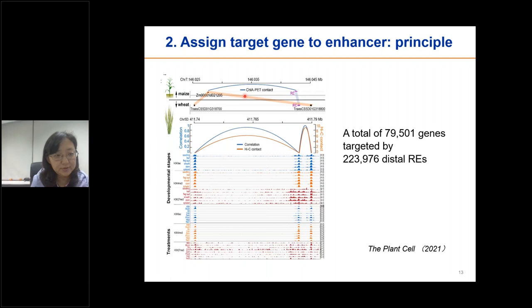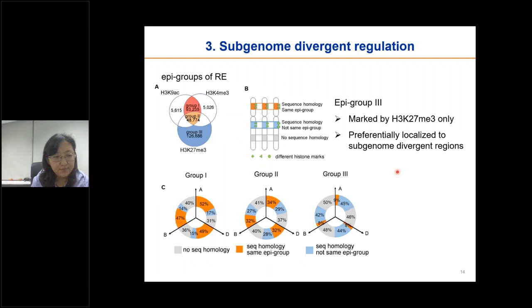Here is an example of an enhancer-promoter pair that is conserved between maize and wheat. The maize gene was duplicated in wheat, but the interaction with these regulatory elements was remembered by both gene copies. In this way, a total of almost 90,000 genes were detected to be targeted by about 200 distal regulatory elements.